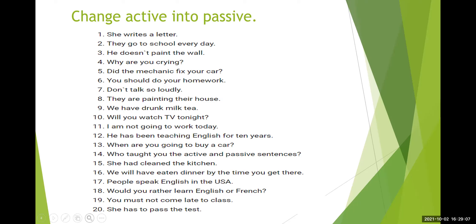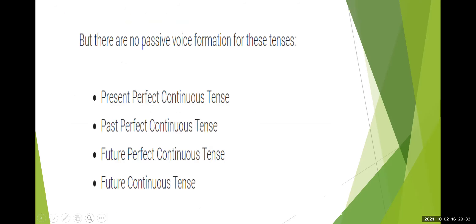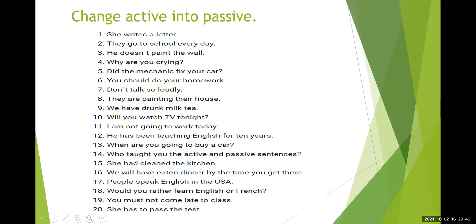Pronouns in active voice have to be converted into pronouns in passive voice: I into me, we into us, he into him, she into her, they into them; you remains you, and it remains it. What are the basic rules for active and passive voice? These are the three basic rules: the subject becomes the object and the object becomes the subject. Use third form of verb — with is, am, are, was, were, been according to the structure. Active pronoun changes into passive as listed.